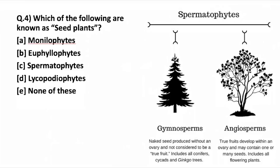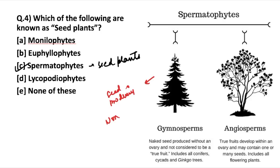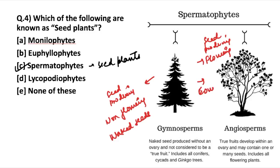Moving on: which of the following are known as seed plants? Phanerogams, or spermatophytes, are known as seed plants because these plants produce seeds. Spermatophytes can be broadly categorized into gymnosperms and angiosperms. Gymnosperms are seed-producing, non-flowering plants with naked seeds — examples include pines and spruce. Angiosperms are seed-producing flowering plants with seeds covered in an ovary — examples include sunflower, maple, and oak.